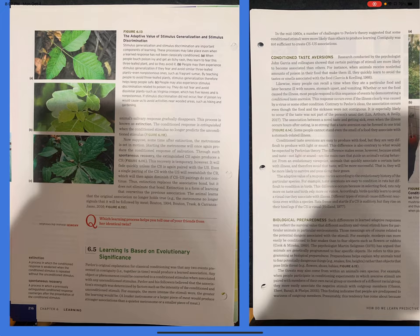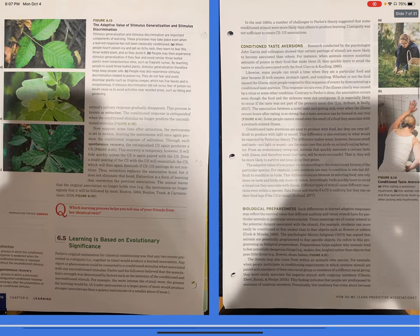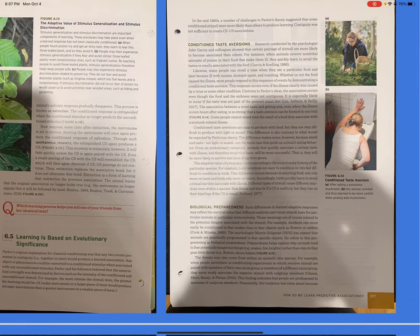Section 6.5: Learning is based on evolutionary significance. Pavlov's original explanation for classical conditioning was that any two events presented in contiguity, i.e. together in time, would produce a learned association. Any object or phenomenon could be converted to a conditioned stimulus when associated with any unconditioned stimulus. Pavlov and his followers believed that the association's strength was determined by factors such as the intensity of the conditioned and unconditioned stimuli. For example, the more intense the stimuli were, the greater the learning would be. A louder metronome or a larger piece of meat would produce stronger associations than a quieter metronome or a smaller piece of meat. In the mid-1960s, a number of challenges to Pavlov's theory suggested that some conditioned stimuli were more likely than others to produce learning. Contiguity was not sufficient to create CS and US associations.